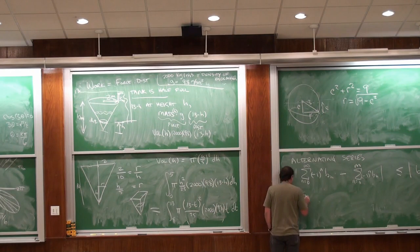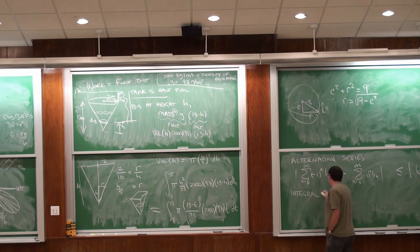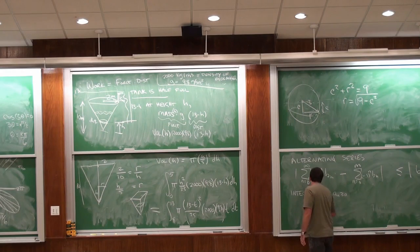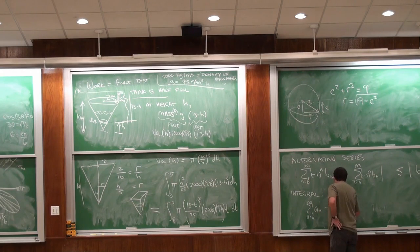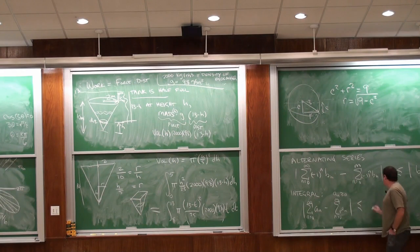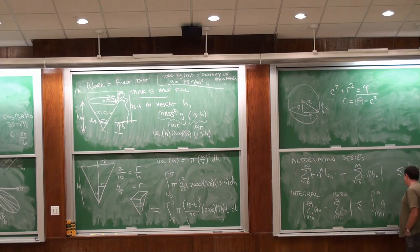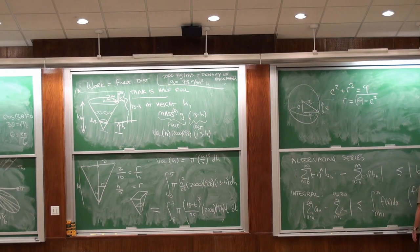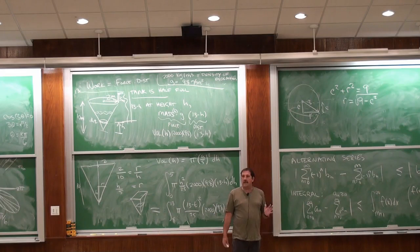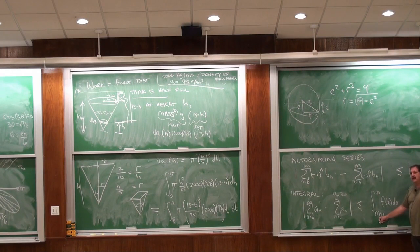Another approach is using the integral test. If my terms a_n are positive, then the error from stopping at the m-th term is bounded by the integral of f(x) from m to infinity, where f(n) equals a_n. You can also do a similar thing with the geometric series by summing the tail, since you know how to sum the tail of a geometric series.